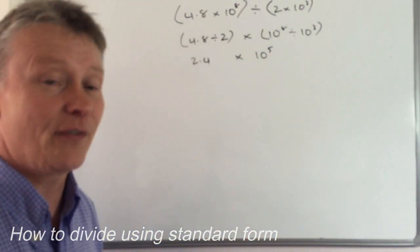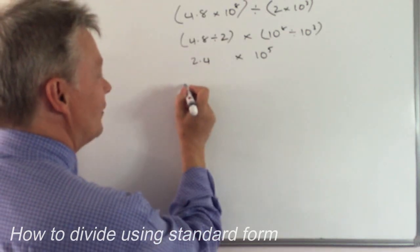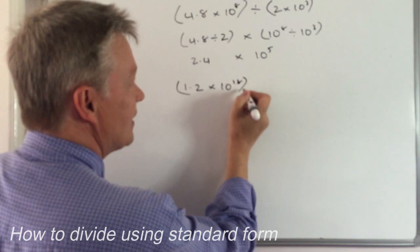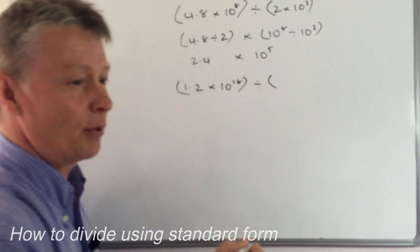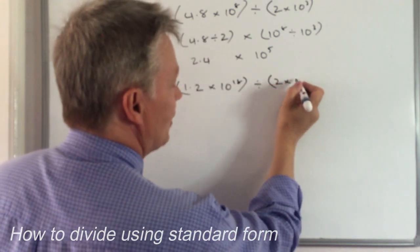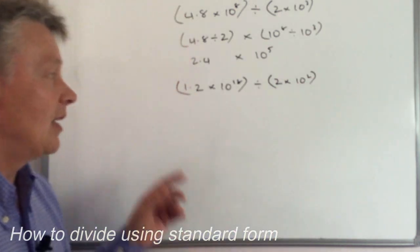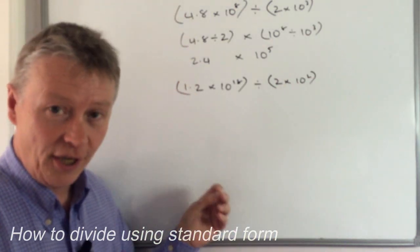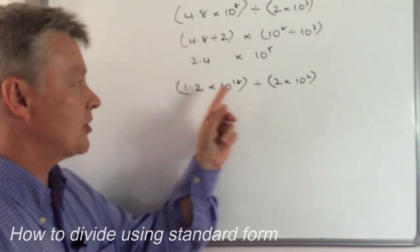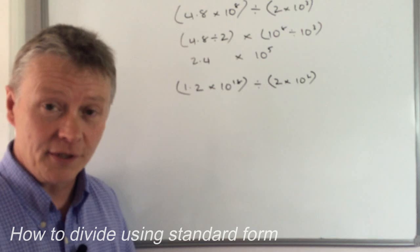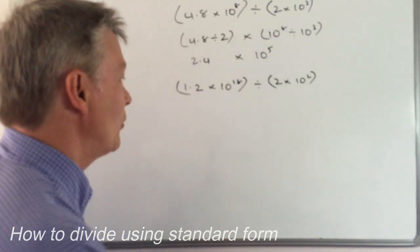Let's try another one which is a very similar sort of idea. And this is 1.2 times 10 to the power of 18 and that's going to be divided by 2 times 10 to the power of 2. So we'll do exactly the same process where we'll take the two numbers that we're dividing together and then we're going to treat the standard form elements of it differently.